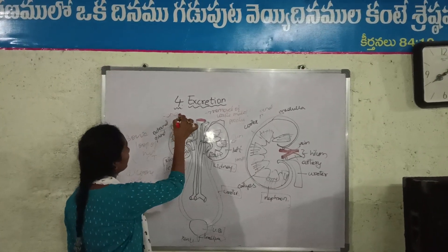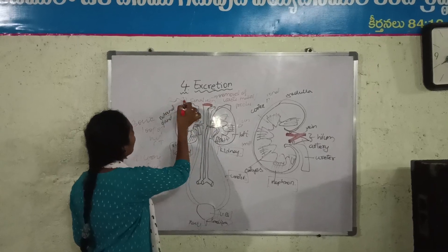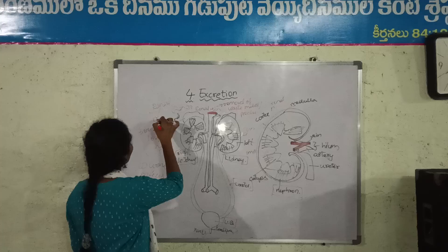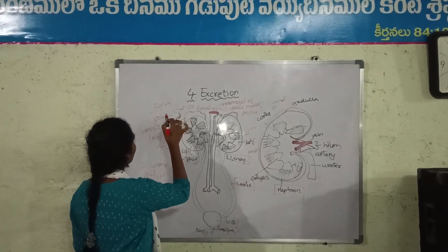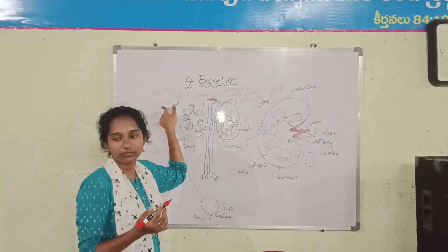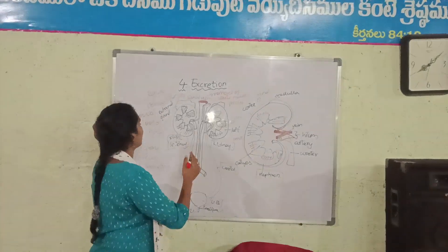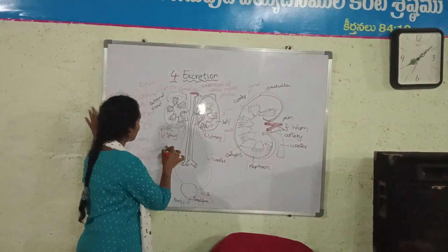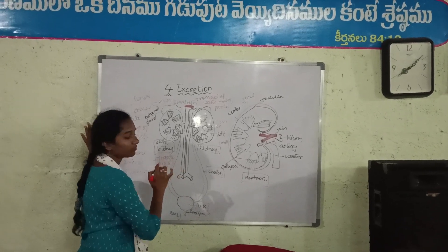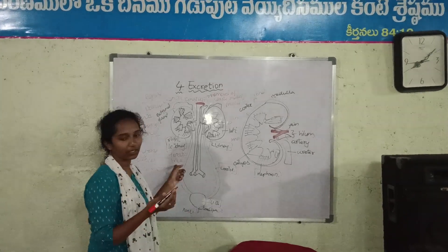This is the renal vein, which is associated with the kidney. The renal vein is kidney. The pulmonary vein is associated with the lung. The hepatic vein is associated with the liver.